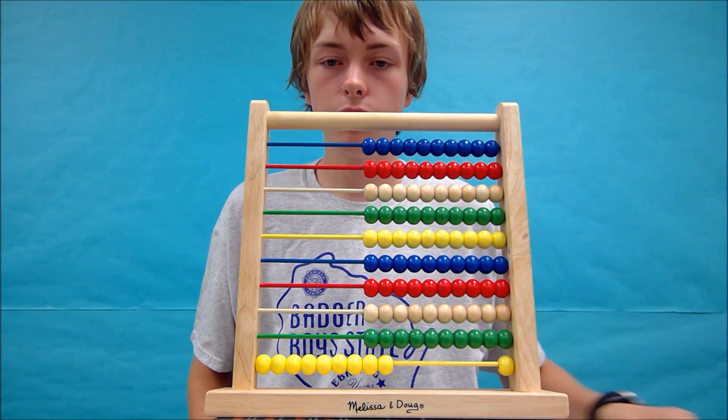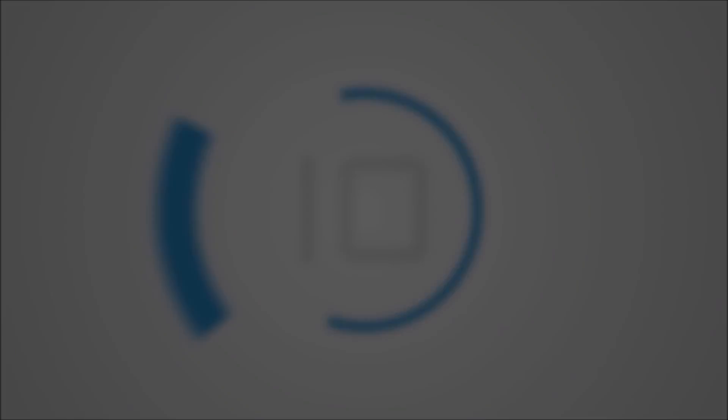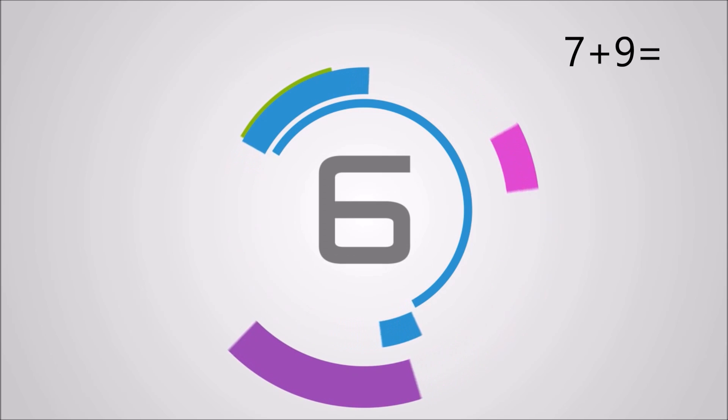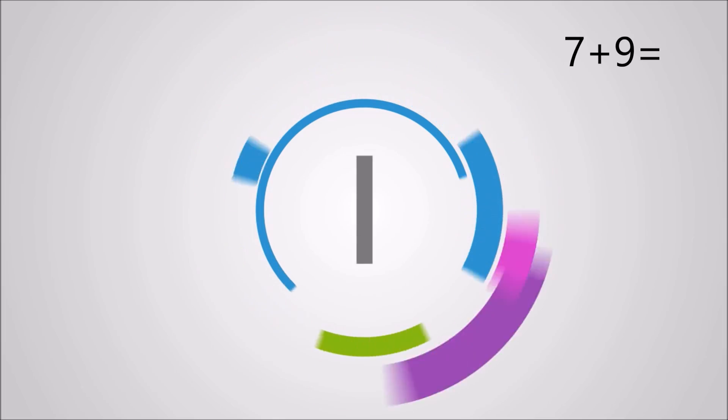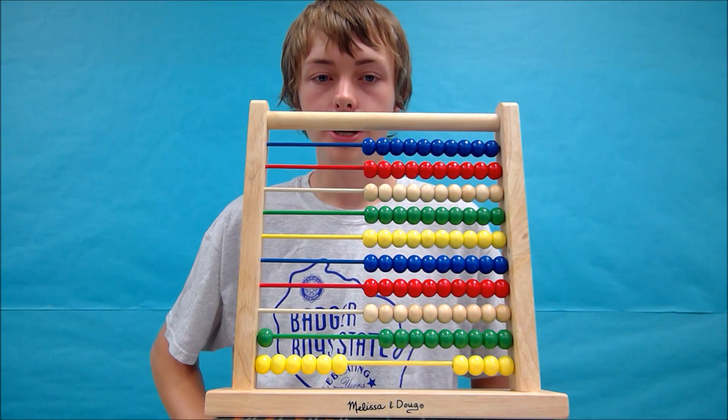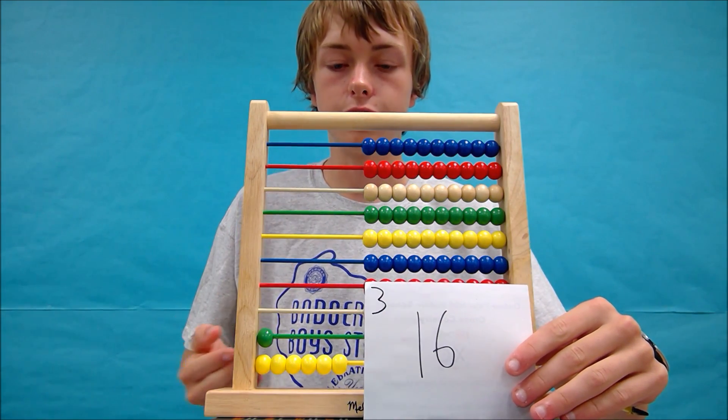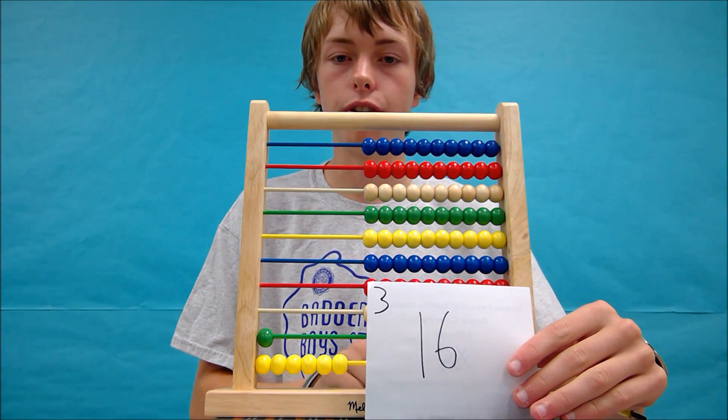Alright, now let's solve 7 plus 9. Your answer should be 16, and your abacus should look like this. Again, there's my 3 for my notes when I moved 7 over.